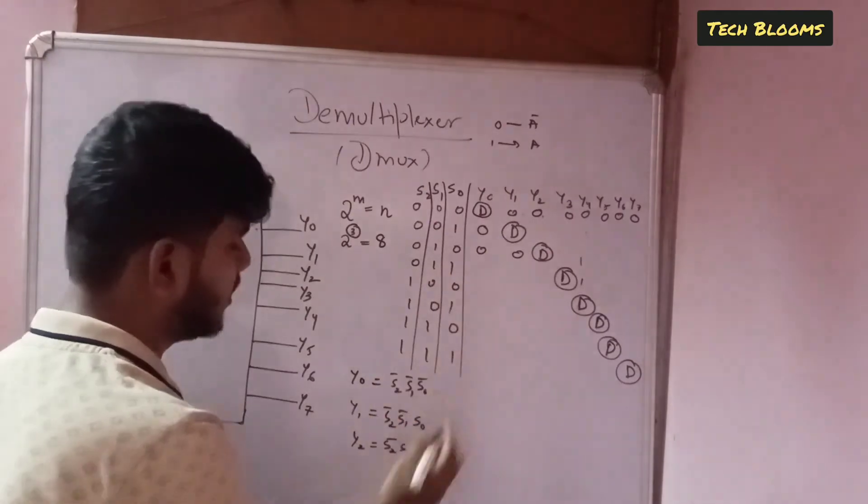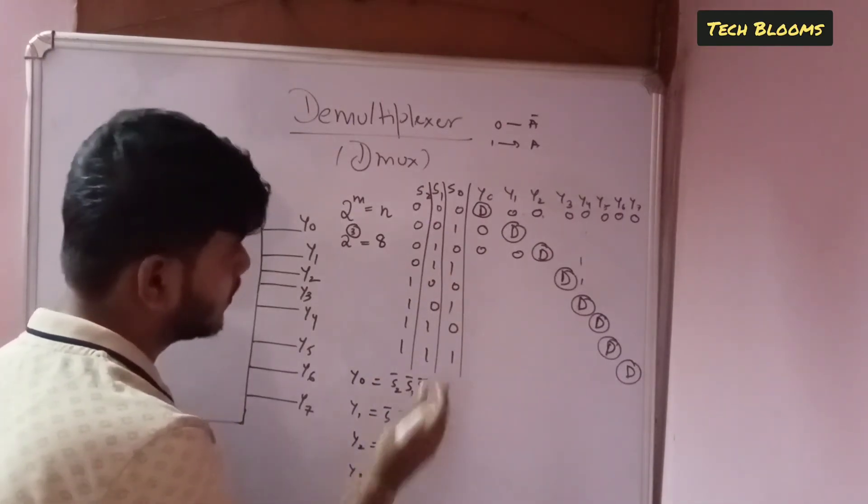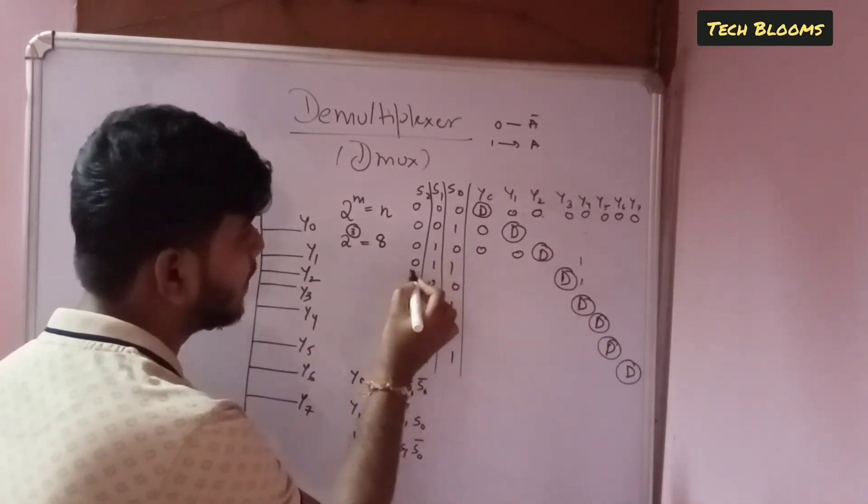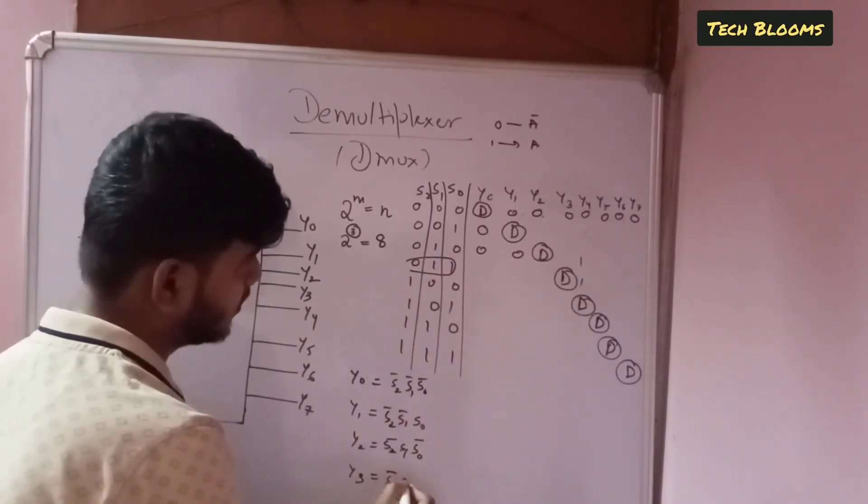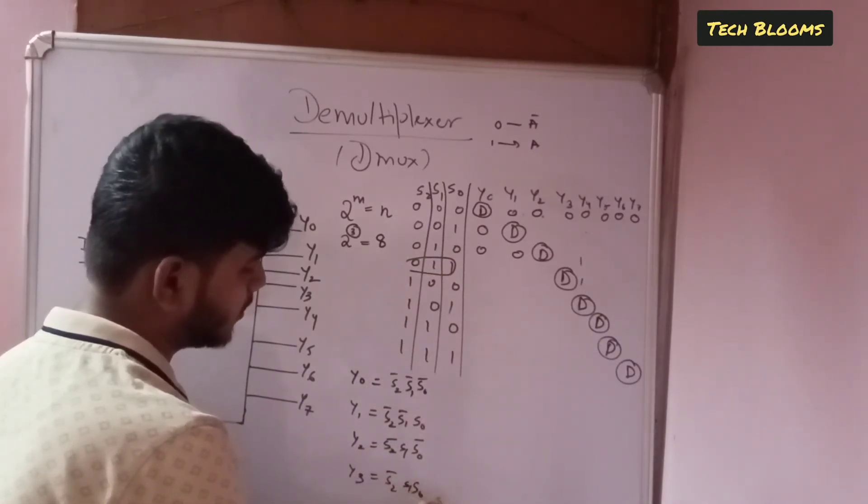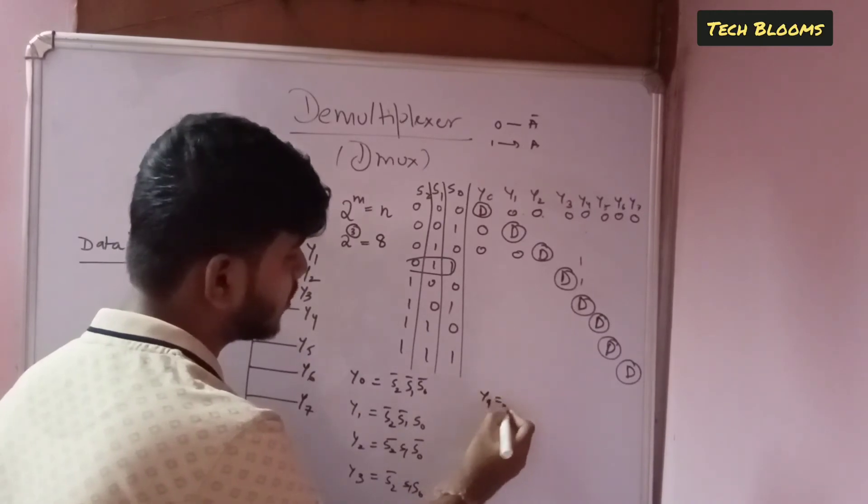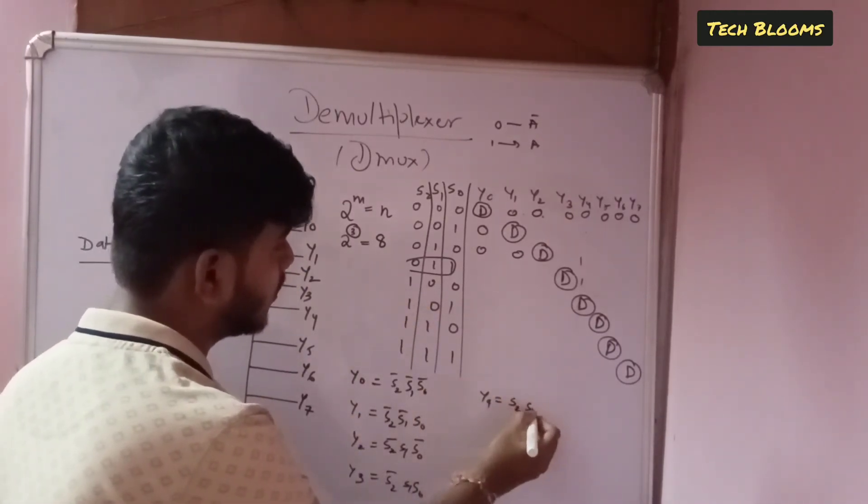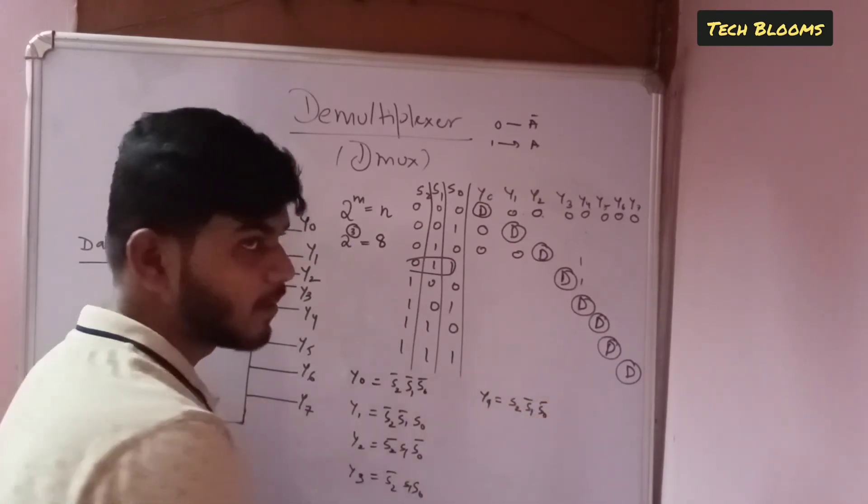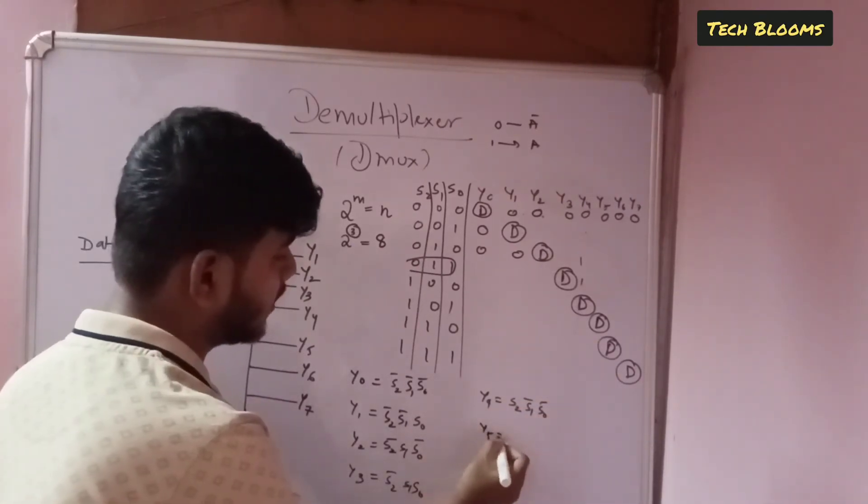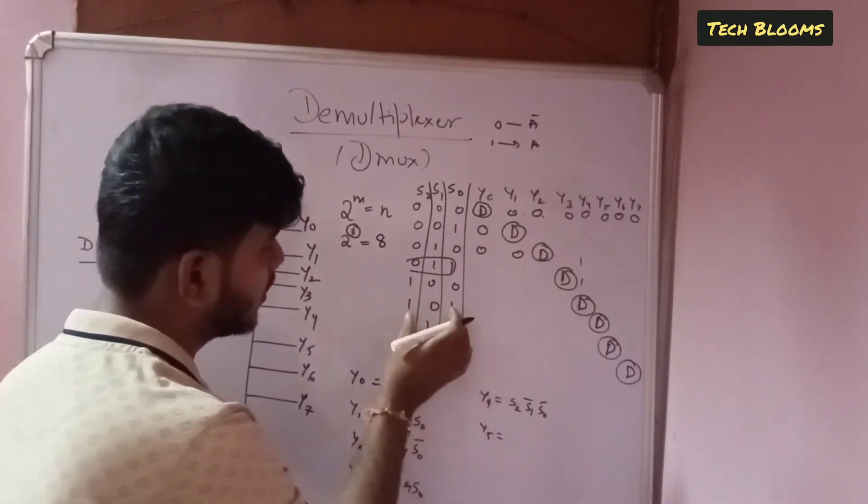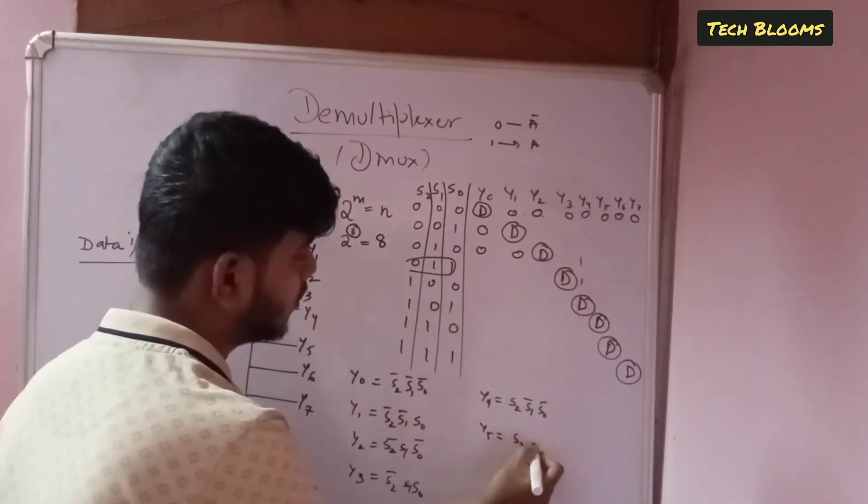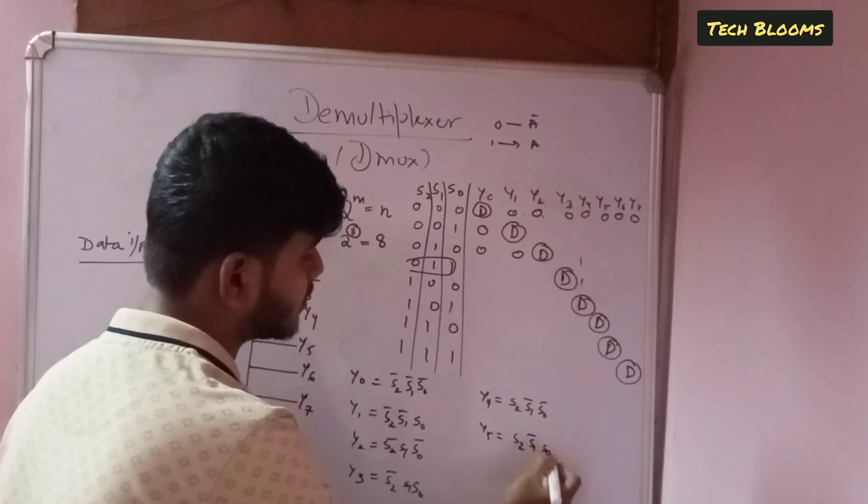Y2 will be s2 bar s1 s0 bar. Y3 will be s2 bar s1 s0.